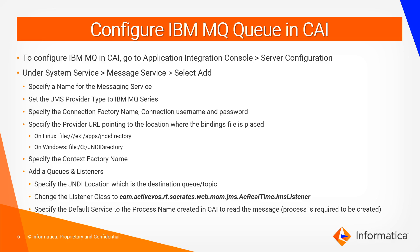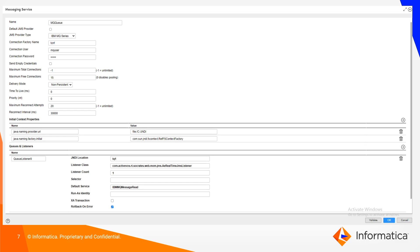Specify the connection factory, connection username, password, and provider URL depending on which OS it is — Linux or Windows. Set the provider URL accordingly. Set the JNDI allocation to the destination for the queue or topic. Ensure you set the listener class to the highlighted one. The default service will be the process name created earlier on CAI, which is used to read the message from the queue or topic. This is a sample messaging service configuration for IBM MQ.